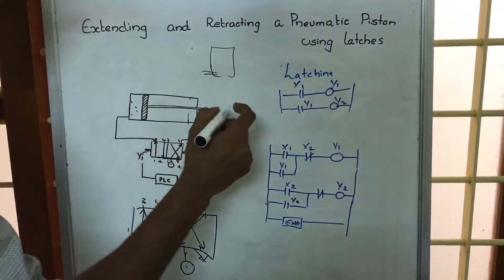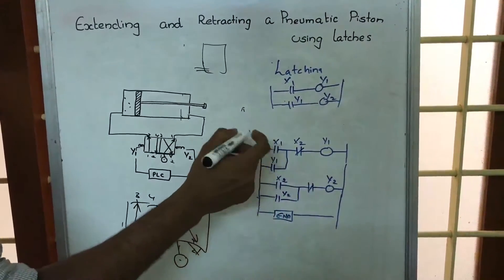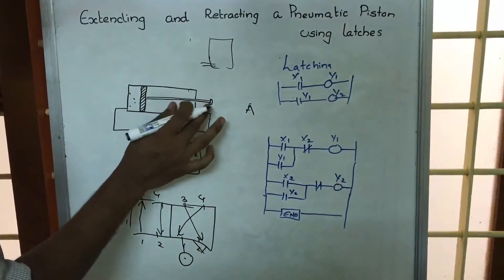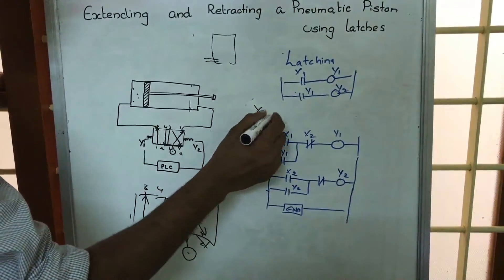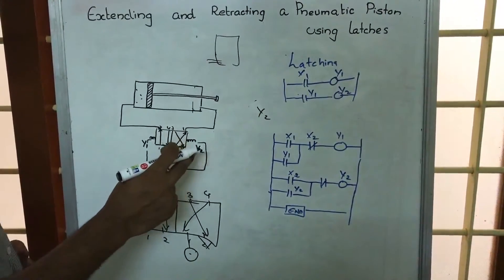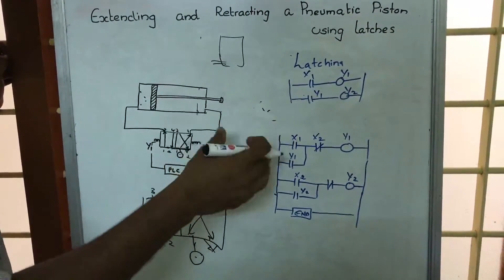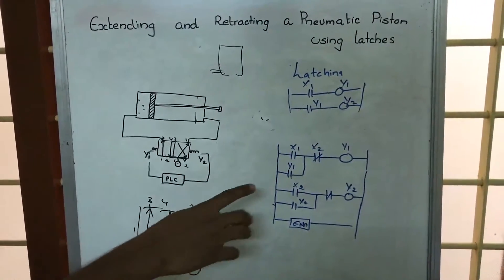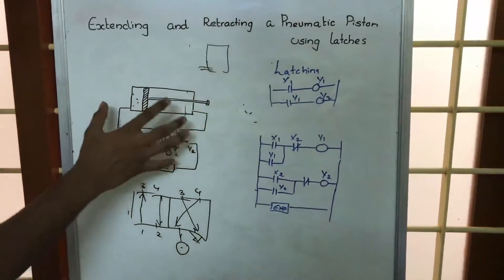When the piston reaches the right-hand end, there is a switch at that position. This end-of-stroke mechanism is actuated, and we call that signal y2 — meaning y2 is actuated when the piston reaches that side. Now let us look at the ladder diagram to explain how this is happening.